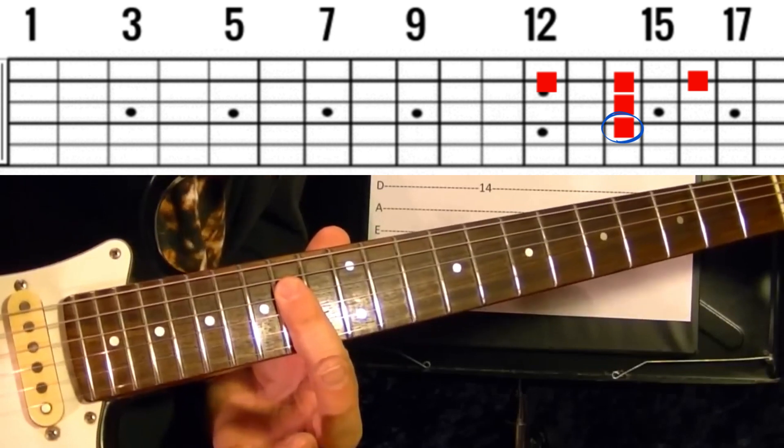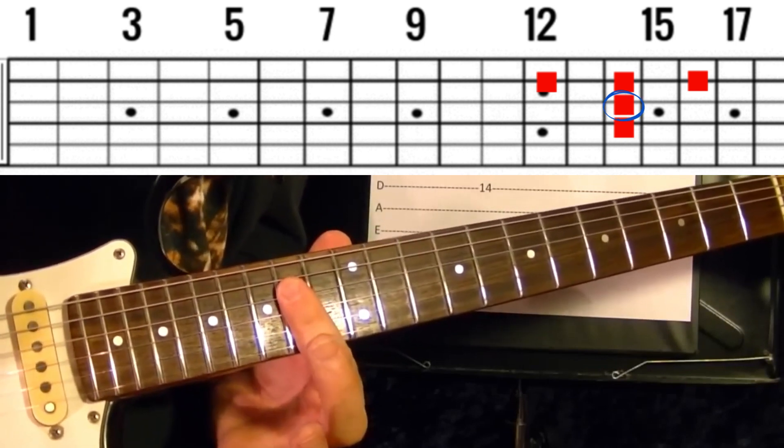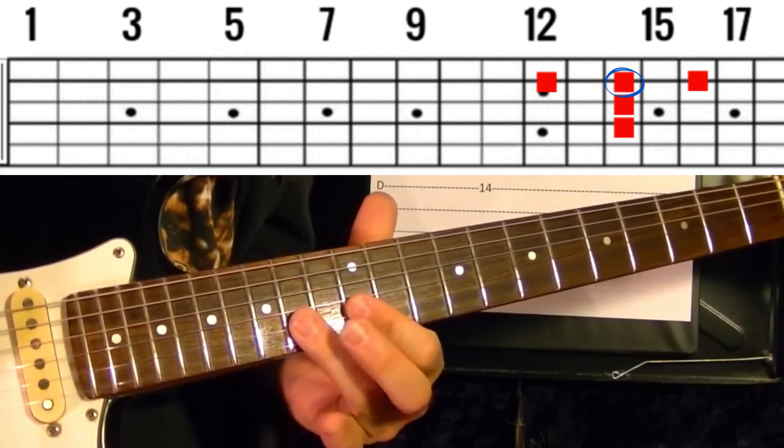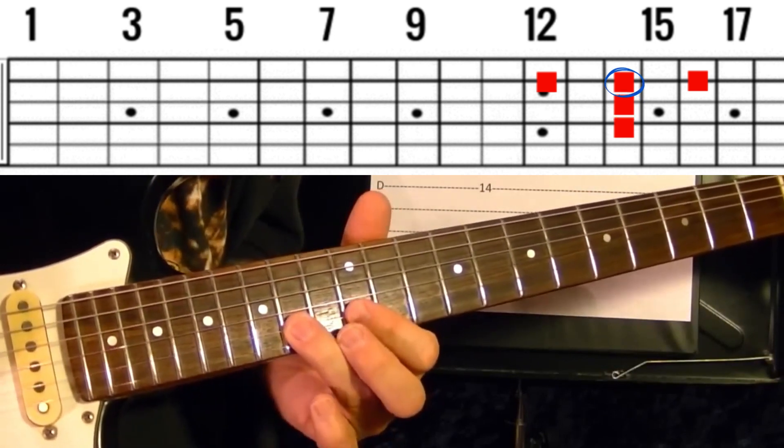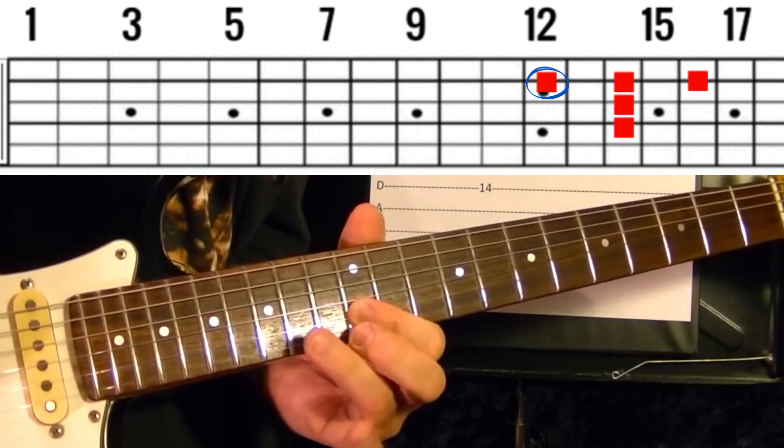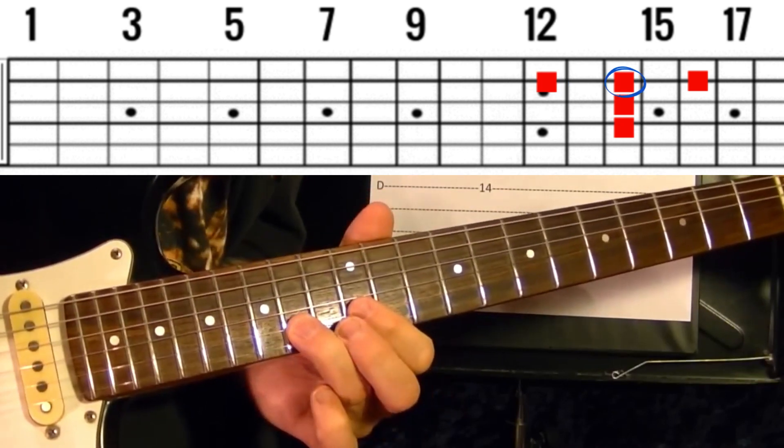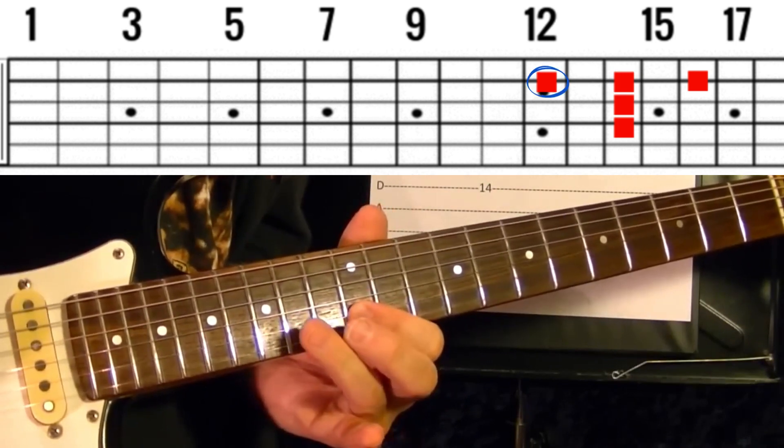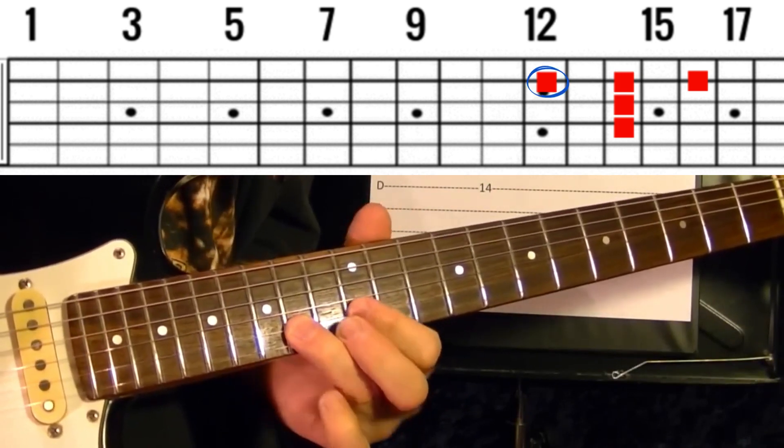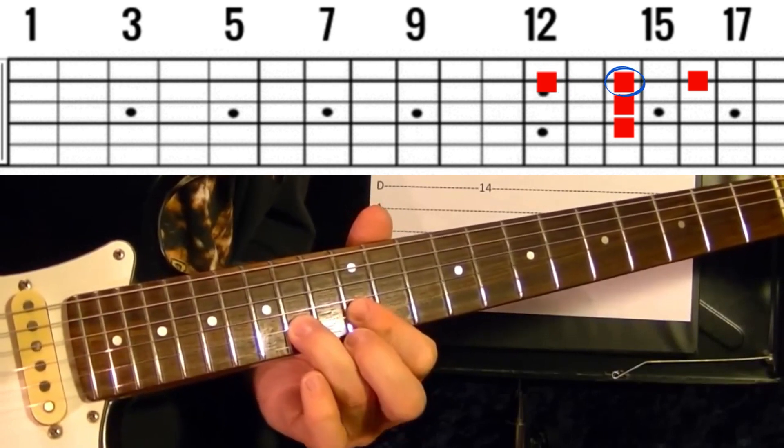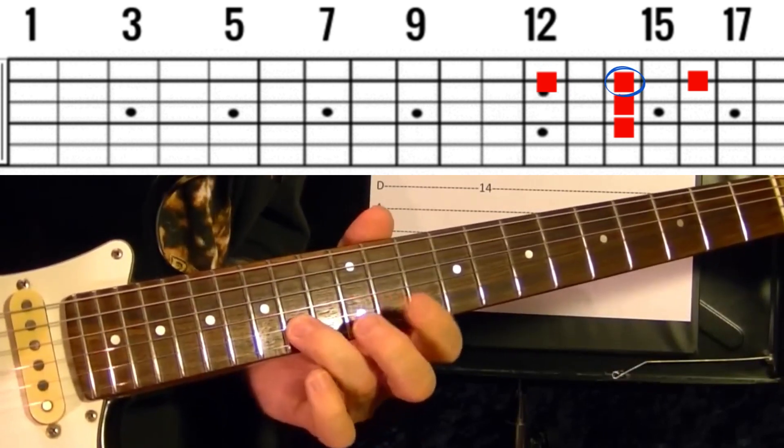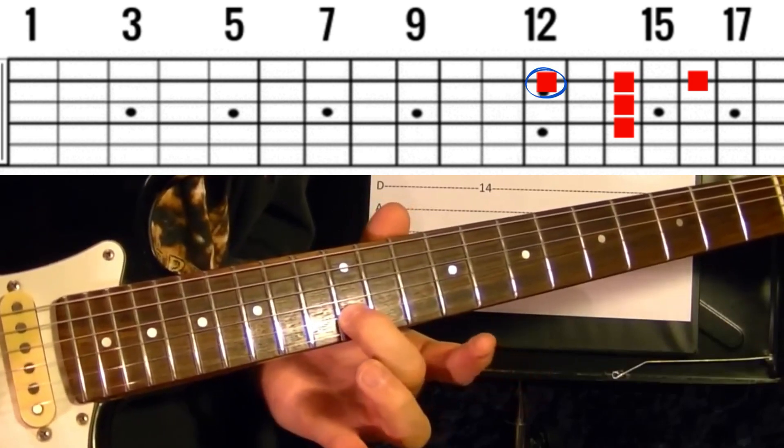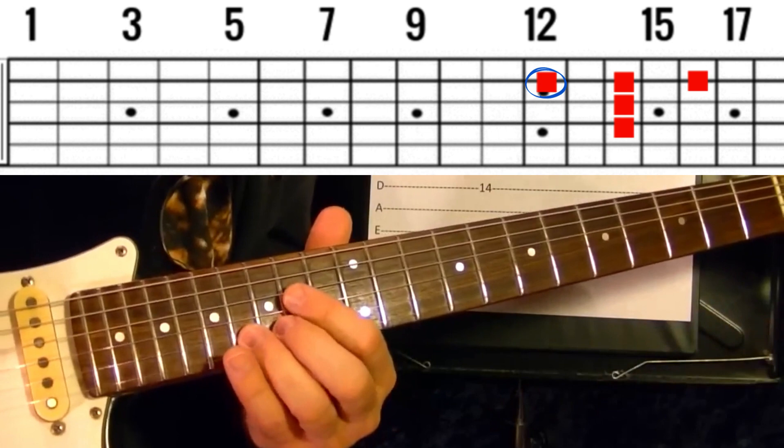Fourth string 14th fret, third string 14th, second string 14th pull off to the 12th, back to the second string 14th, 14th again, 12th slide down.